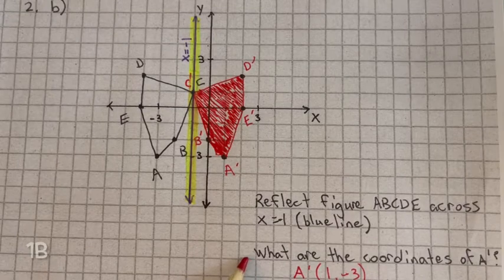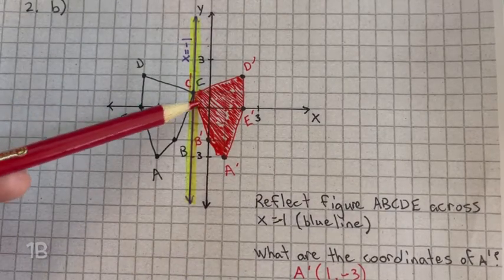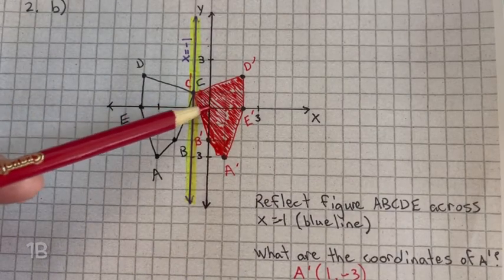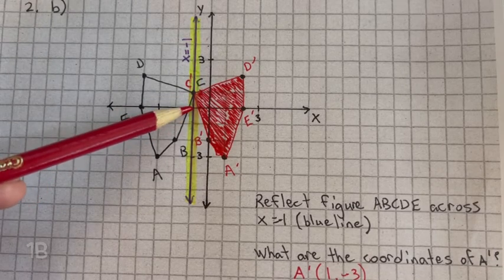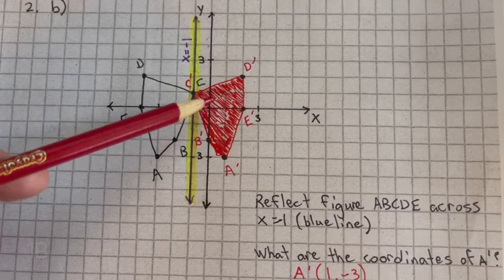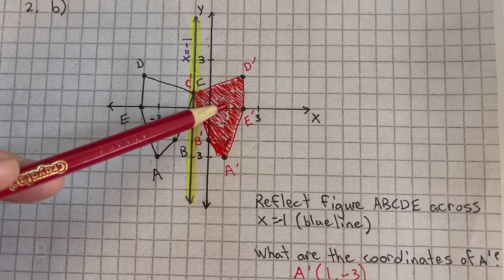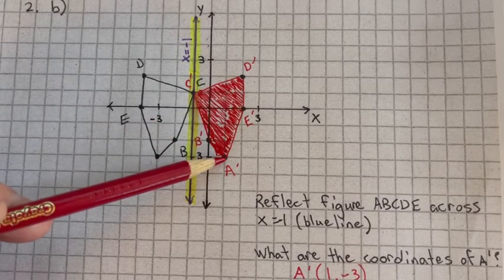What are the coordinates for a prime? Start at the origin — don't start at the line of reflection, start at the origin, 0, 0 — 1 on the x, negative 3 on the y.